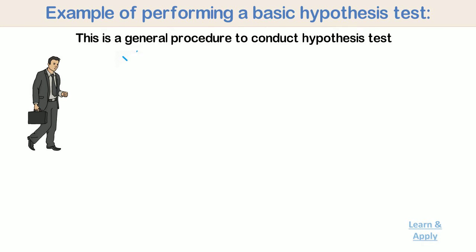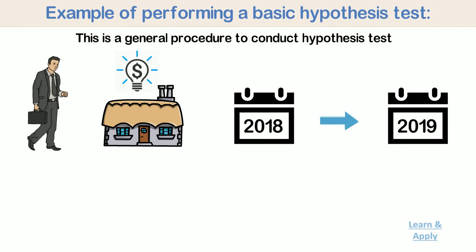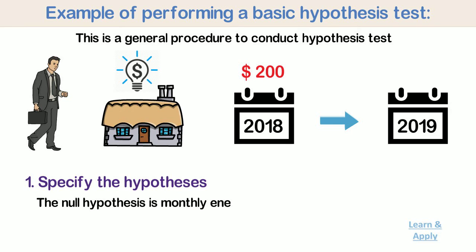Let's see this procedure with an example. An economist wants to determine whether the monthly energy cost for families has changed from the previous year when the mean cost per month was $200. The economist follows the basic steps for doing a hypothesis test. First, specify the hypothesis. The economist formulates the hypothesis. The null hypothesis is monthly energy cost families is equal to $200. Formally, this is written as H0: μ = $200.